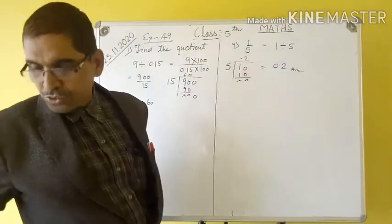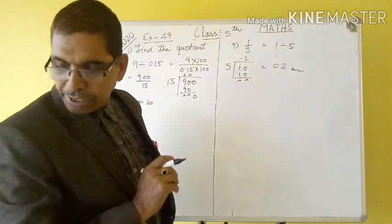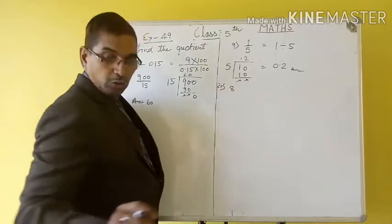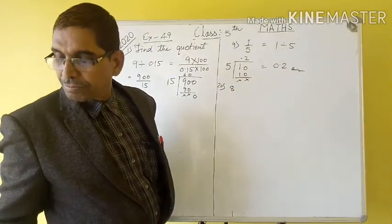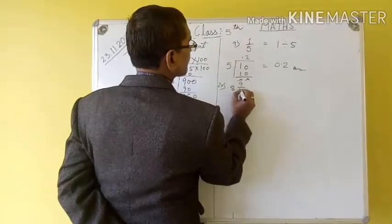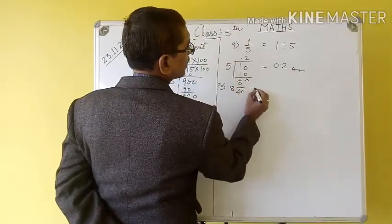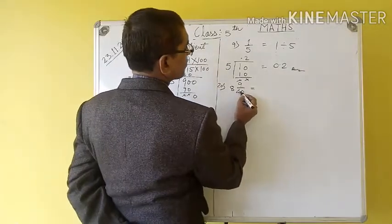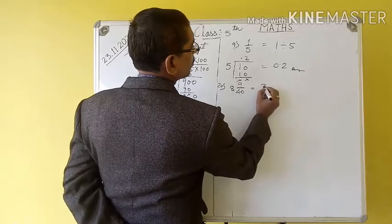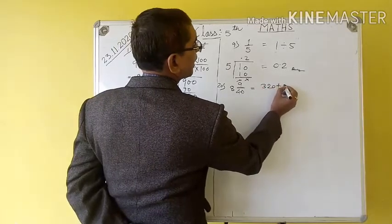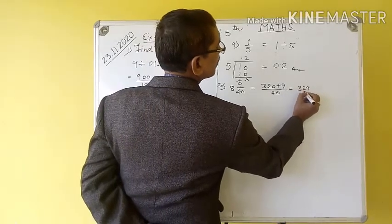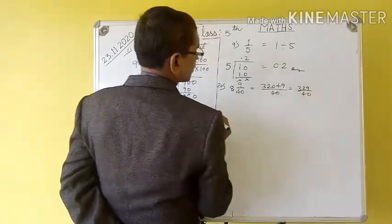Now the next question, question number 20: 8 whole 9 upon 40. This needs to be changed into decimal form.